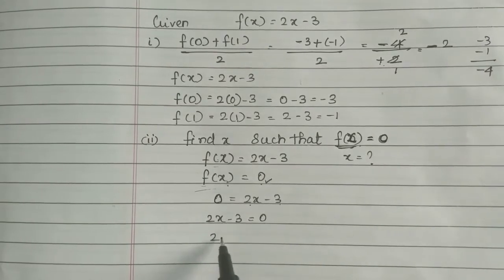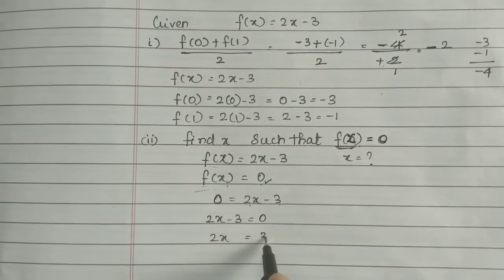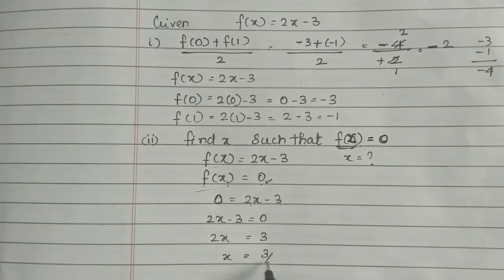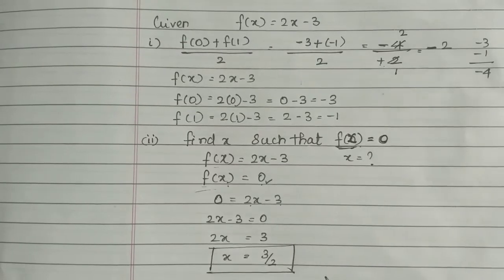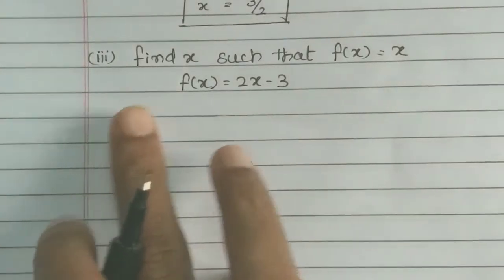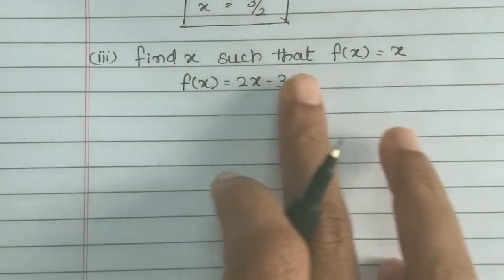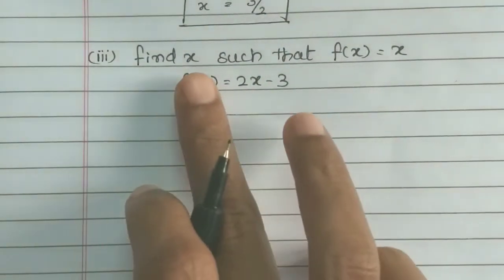Setting f(x) = 0: 2x - 3 = 0, so 2x = 3, therefore x = 3/2. So x is equal to 3 by 2.